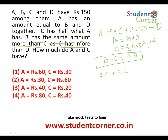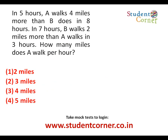With b + d = 2c and a = 2c, the total is a + b + c + d = 2c + 2c + c = 5c. Since the total is 150, 5c = 150, so c = 30. The answer is 30, which matches the first option.